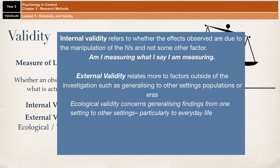Temporal validity is the issue of whether findings from a particular study hold true over time. An example is Asch's study — one of the biggest evaluation points is that it's a child of its time, done in the 1950s when people were very conformist anyway. If you did it again in the 80s, like Perrin and Spencer did, you might find that actually fewer people conform. So that's temporal validity: does it hold true over time?